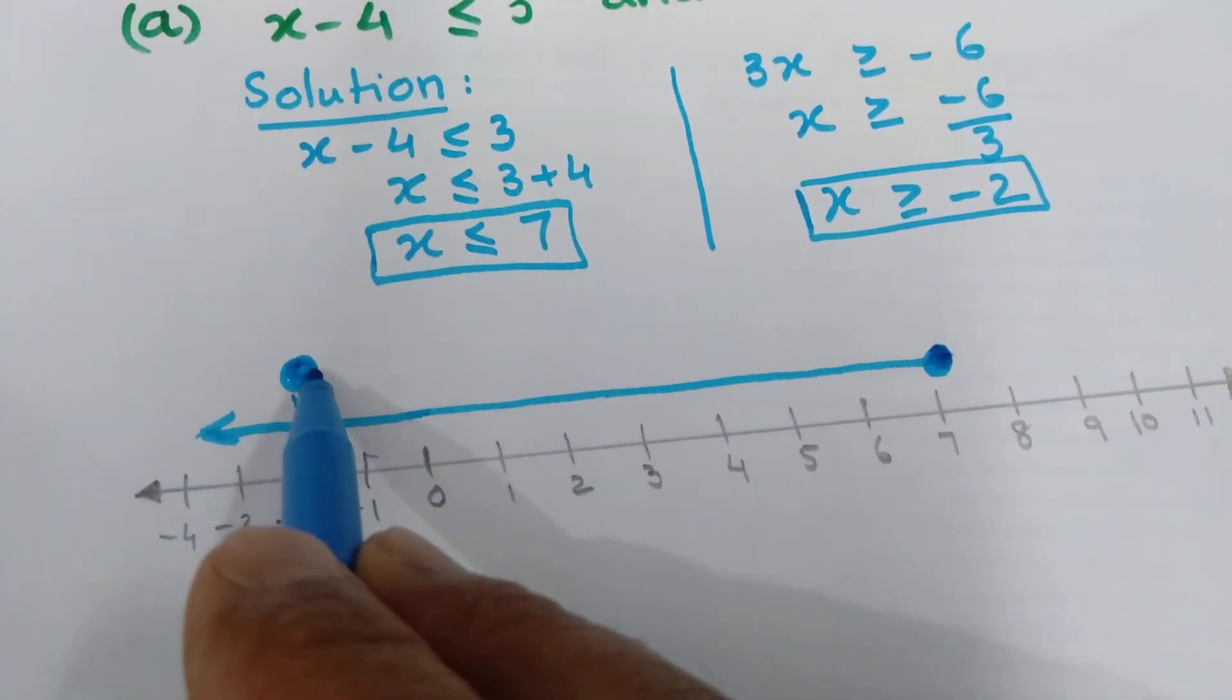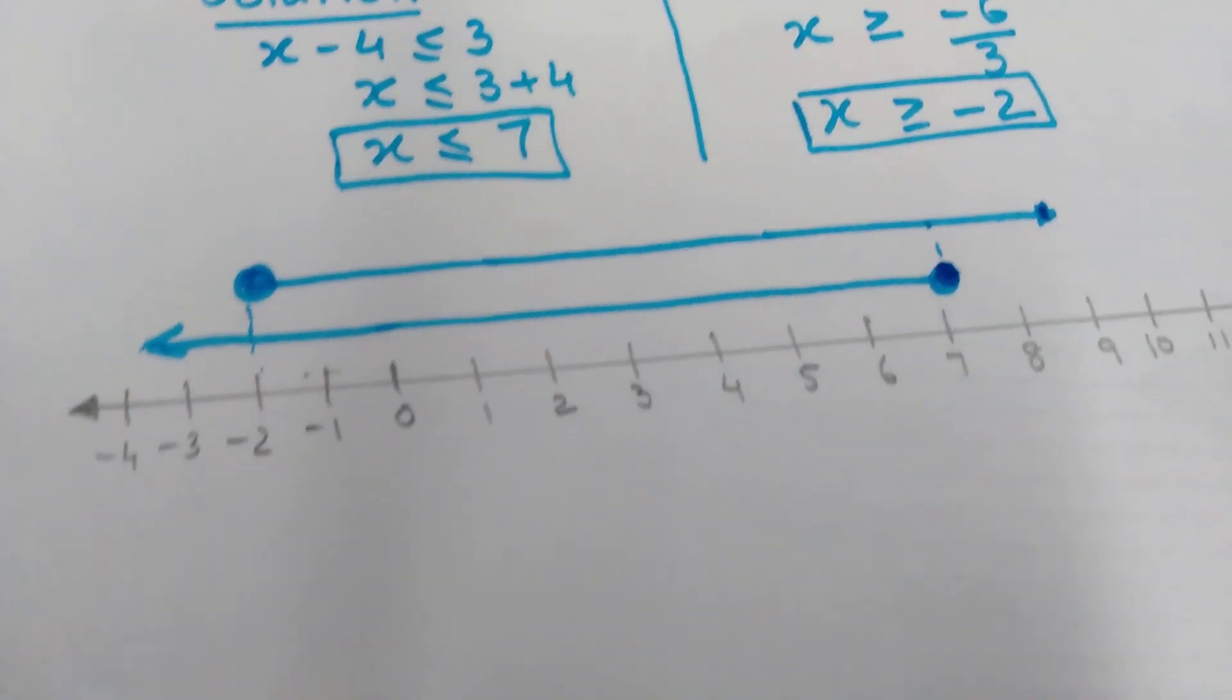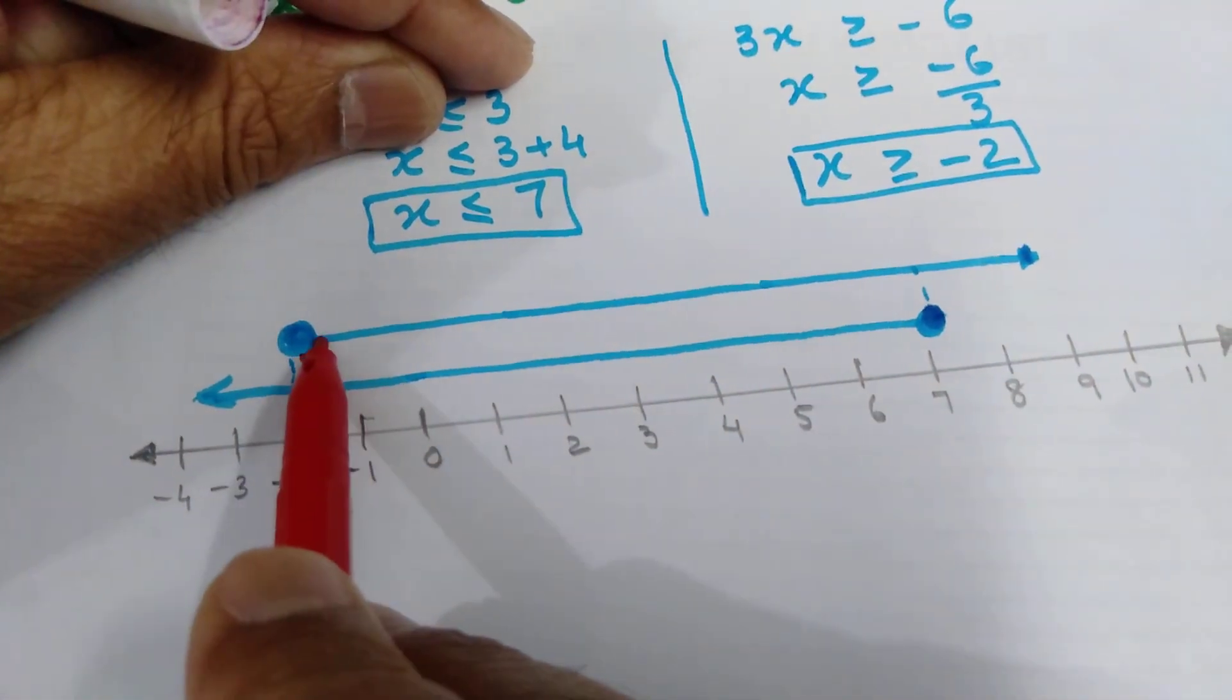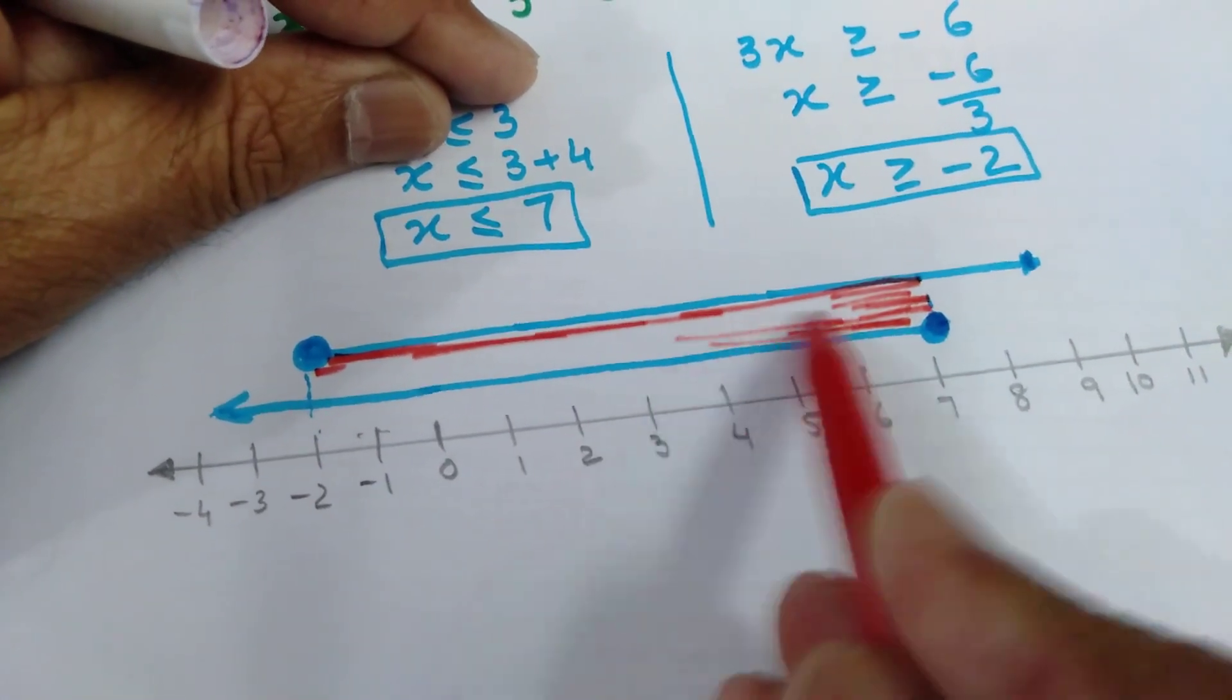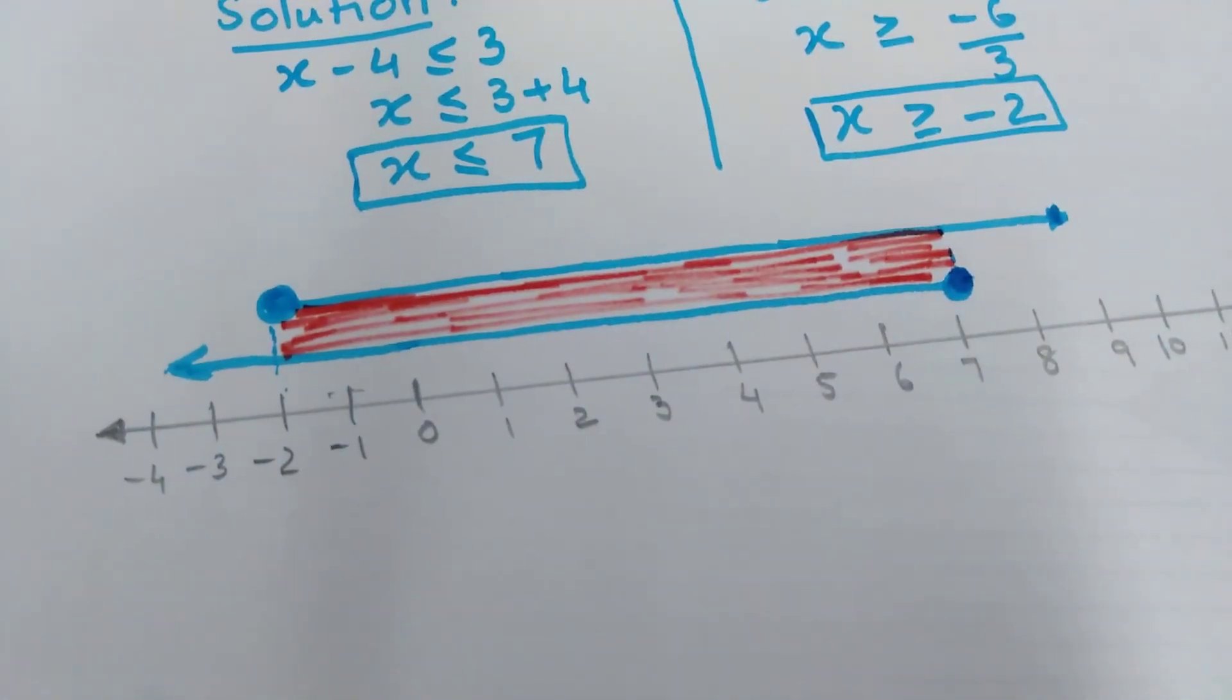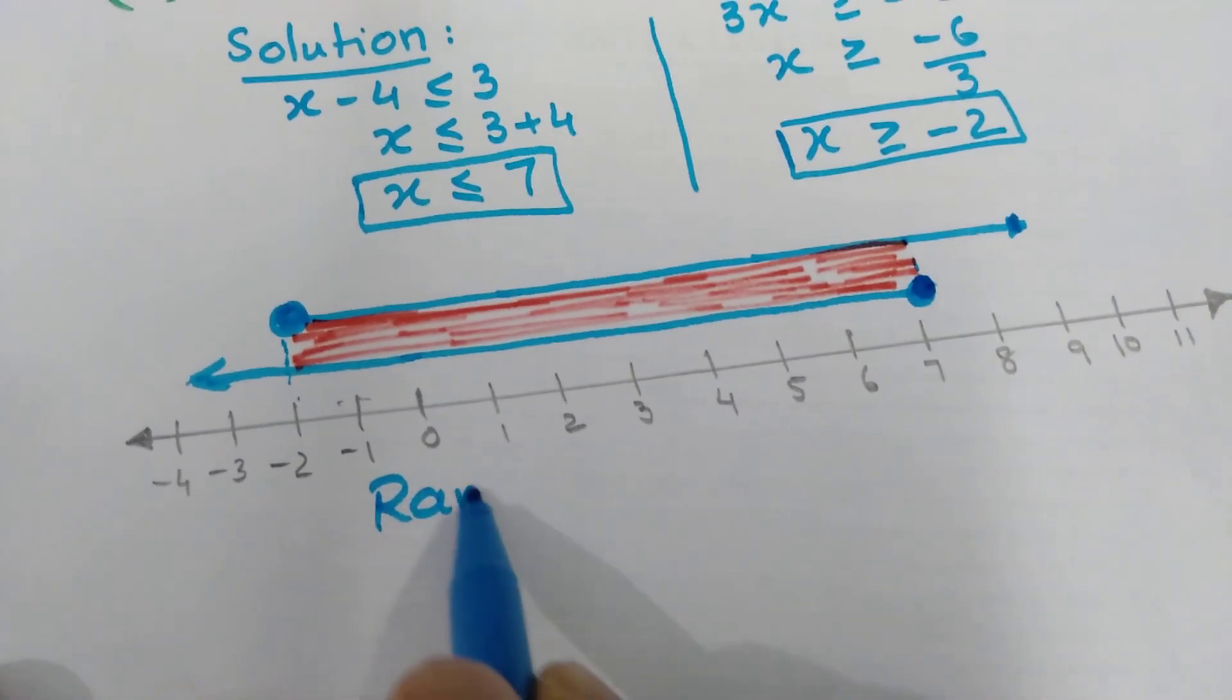x is greater than or equal to minus 2 means all values greater than or equal to minus 2 are these values. To write the answer, this is your region. The region is between minus 2 and 7. All integers between minus 2 and 7 inclusive will be the answer's range values.